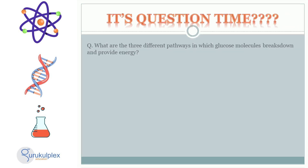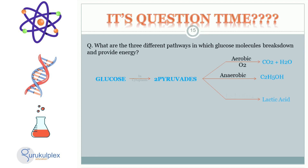Glucose is essential for energy production and its breakdown is achieved through three main pathways. Glycolysis is the process of breaking down glucose molecules into pyruvate, whilst releasing two ATP molecules. When oxygen is present, pyruvate is then converted into carbon dioxide and water in the aerobic pathway. If oxygen is lacking, pyruvate is instead converted into lactic acid, also generating two ATP. The third pathway of energy production is through alcoholic fermentation, wherein pyruvate is broken down to ethanol and carbon dioxide.